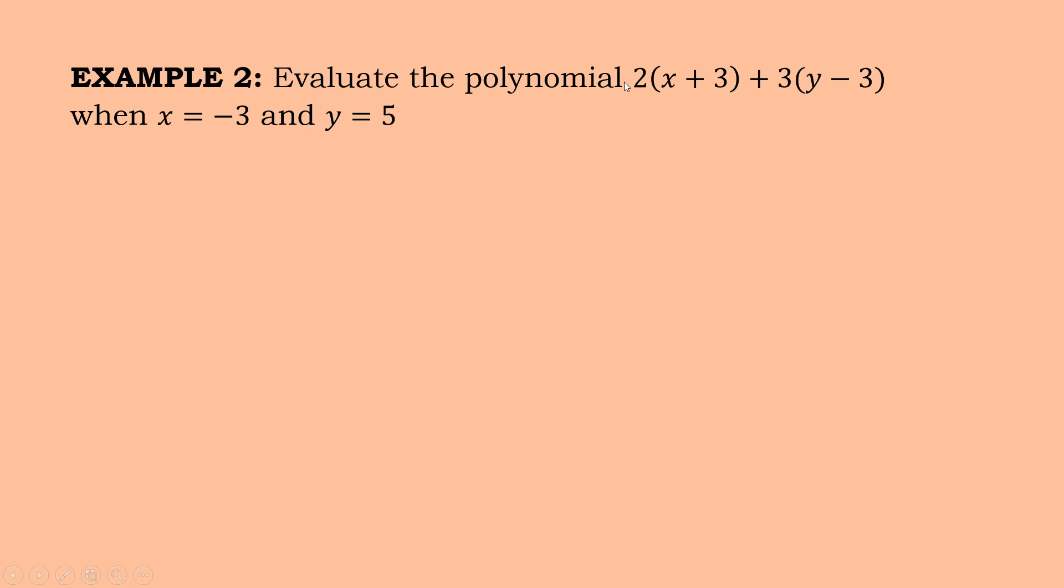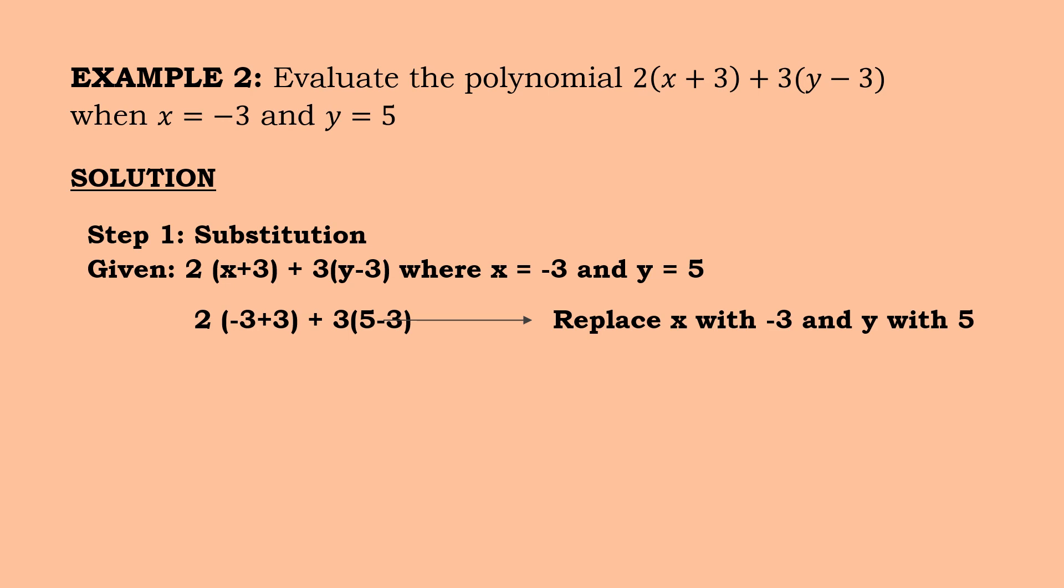Evaluate the polynomial 2(x+3) + 3(y-3) when x is equal to negative 3 and y is equal to 5. Meaning, from this example, you have your value of your x and y. So x is equal to negative 3 and y is equal to 5. Now, solution. Step 1 is the same thing what we did in our previous example. We have to substitute the value of our x and y to get the answer.